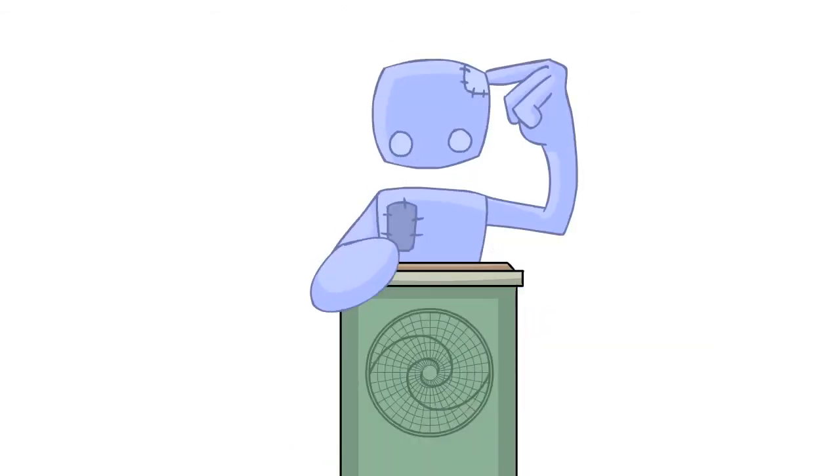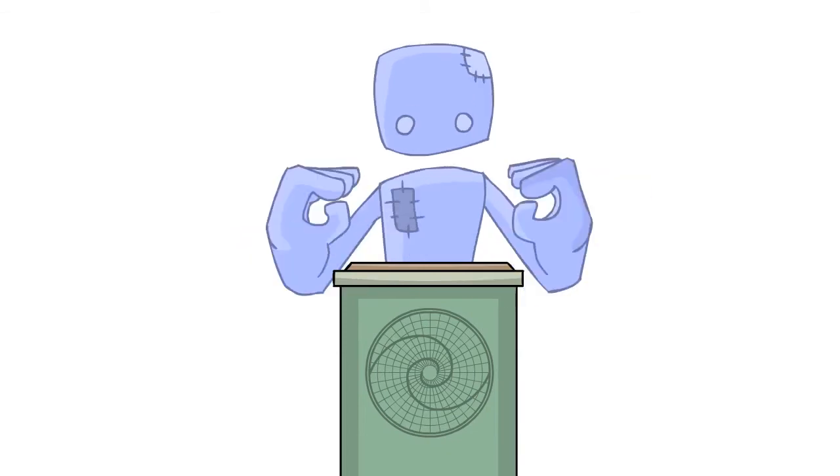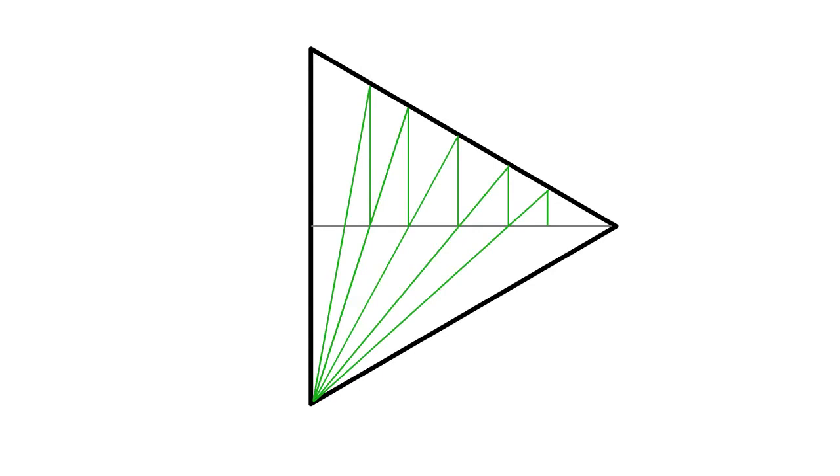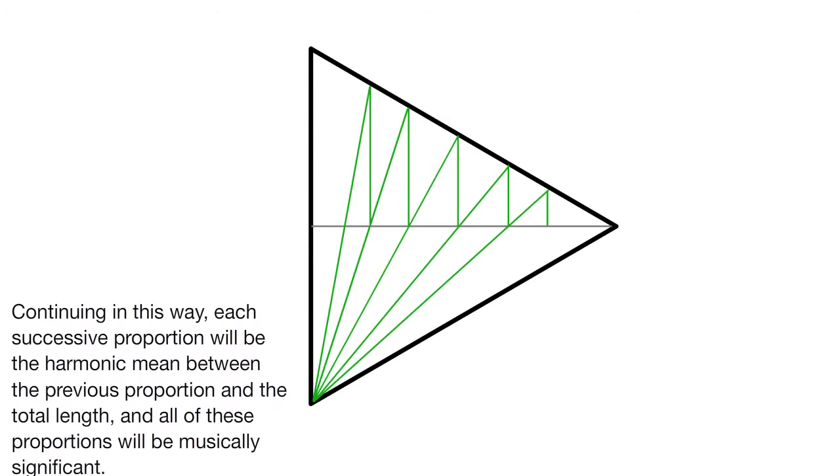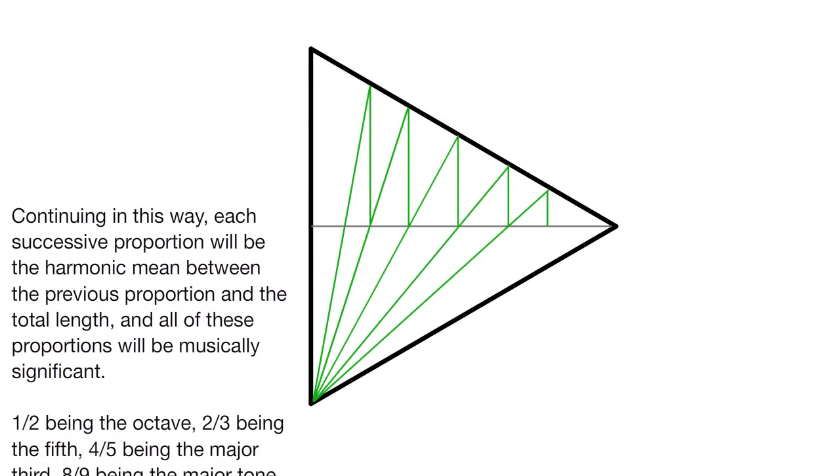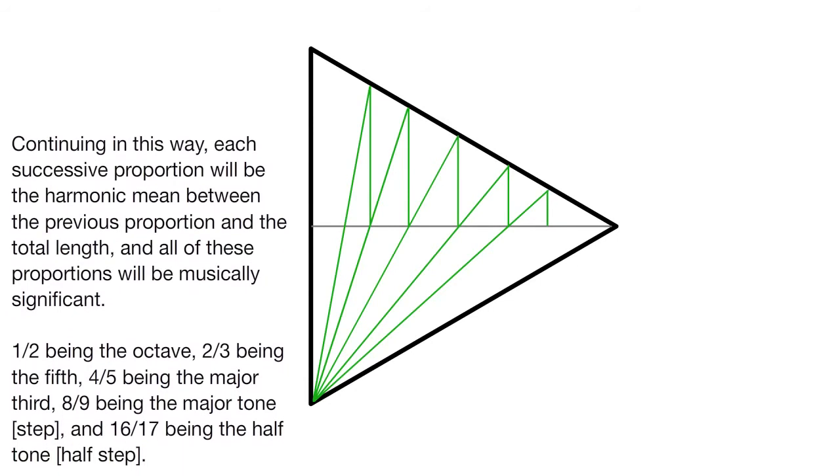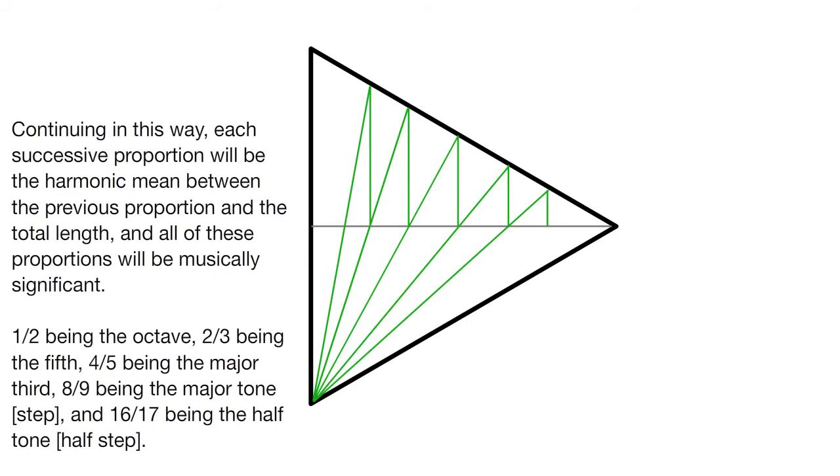Let's divert yet again to look at something very interesting. There was a man named Keith Critchlow who discovered something very important to understanding the geometry of music. First, he drew a straight line through an equilateral triangle, and then he measured from the middle of the center line and drew a straight line up to the top edge and back down to the bottom corner. Then he did the same but passed through the center line of the top and back down again. He did this yet again on the other side. You can keep doing this on either side as well. By drawing this funny little form, he discovered something of great importance. He writes, continuing in this way, each successive proportion will be the harmonic mean between the previous proportion and the total length, and all of these proportions will be musically significant. One over two being the octave, two over three being the fifth, four over five being the major third, eight over nine being the major tone or step, and 16 over 17 being the half tone or step. In other words, he discovered the geometries of music, or at least one aspect of them.